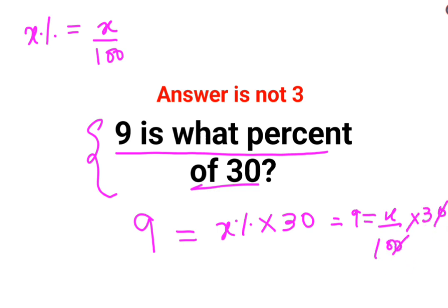Now this and this gets cancelled. So in order to find the value of x, we will multiply 9 by 10 and divide it by 3.